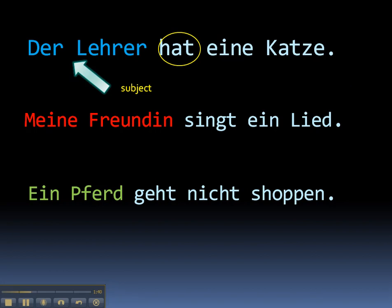What about the second example? Meine Freundin singt ein Lied — my friend sings a song. What's the action here? Singt is our verb. So who or what is doing the singing in this sentence? Meine Freundin. So she is the subject — she is doing the action of the verb, so she's the subject and in the nominative case.